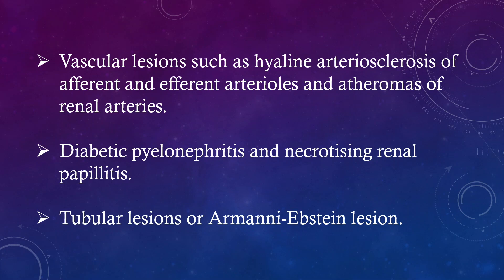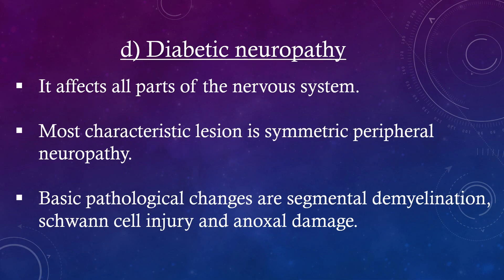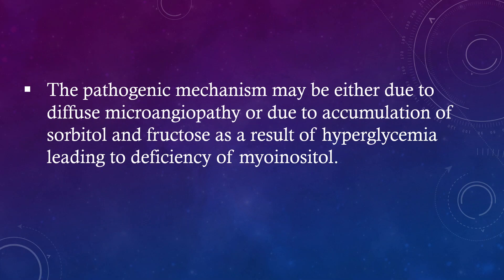Additional lesions include diabetic pyelonephritis and necrotizing renal papillitis. Diabetic neuropathy affects all parts of the nervous system. The most characteristic lesion is symmetric peripheral neuropathy. Basic pathological changes are segmental demyelination, Schwann cell injury, and axonal damage. The pathogenic mechanism may be either due to diffuse microangiopathy or accumulation of sorbitol and fructose as a result of hyperglycemia, leading to deficiency of myo-inositol.